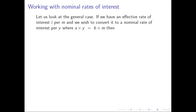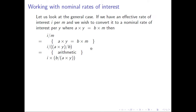Now let's look at the general case. If we have an effective rate of interest i per m, and we wish to convert it to a nominal rate of interest per y, where a×y = b×m, then observe: i per m is just the same as i divided by m. So i over m equals — substituting for m, since a×y = b×m, then m = a×y/b.